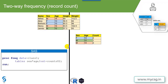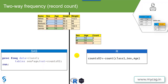In SAS, for a two-way frequency, we specify the names of both variables with an asterisk in between on the TABLE statement, requesting a cross-tabulation of sex and age. The output dataset will have variables for sex, age, and count. In R, it is simply an extension of the previous code — we just list the additional variables as extra arguments to the count function, separated by commas after the dataset name. For a third variable, we would list it after age.